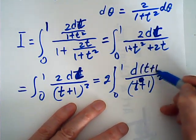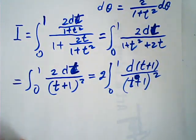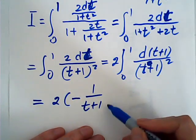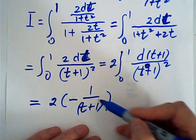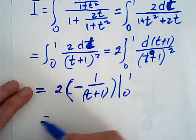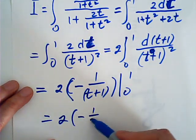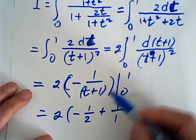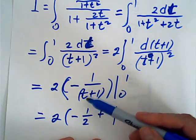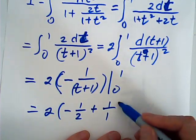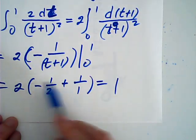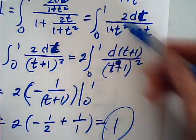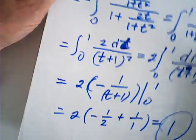Substituting u = t+1, this becomes ∫₀¹ 2dt/(t+1)², which equals 2 · [−1/(t+1)] from 0 to 1. Evaluating: 2·(−1/2 + 1/1) = 2·(1/2) = 1. The result is 1, the same as Method 1.